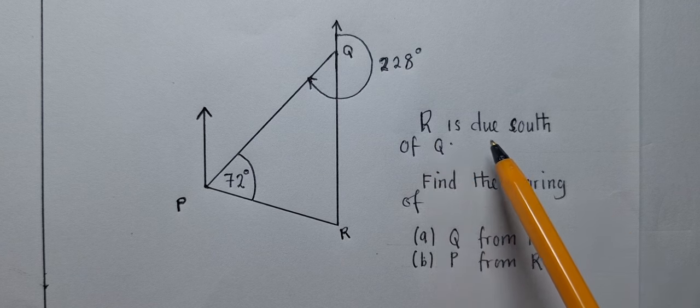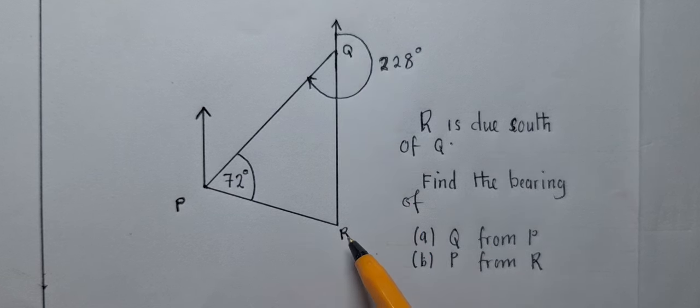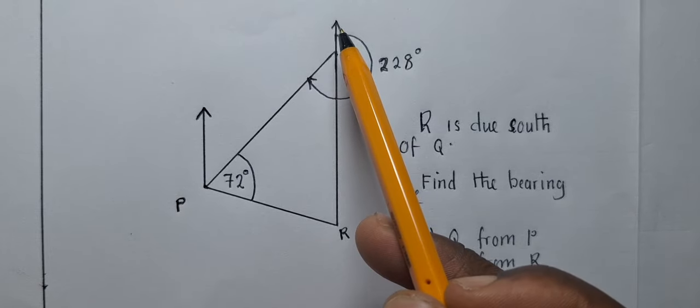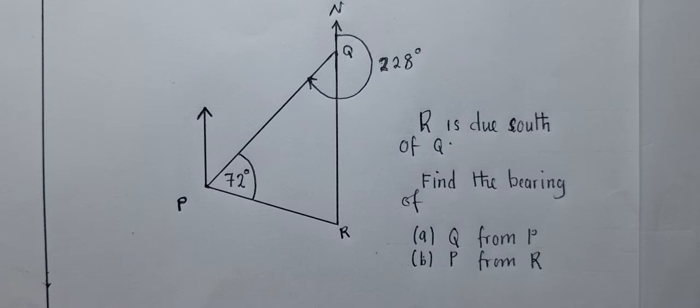They've said R is due south of Q. So Q is right here. R is due south. So this is south and this is north. This is north right here, that's supposed to be N. It's north.